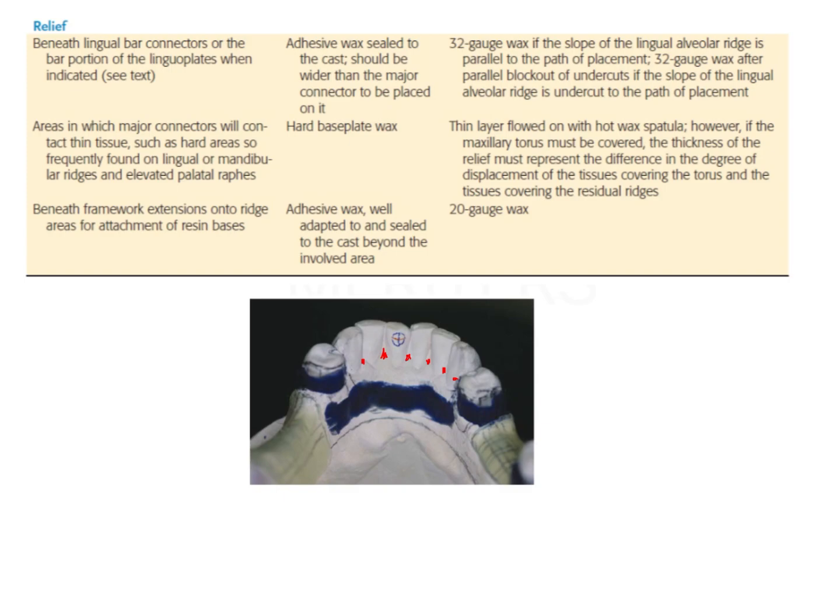Then you're going to duplicate the cast in a refractory material and make a wax pattern on that. You cannot directly use a stone model as is for casting because it will disintegrate with the temperature changes of casting. So you have to duplicate the cast. Before duplicating, you need to block all the other areas which are not required and which are going to interfere in the placement of your partial denture.